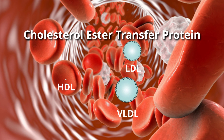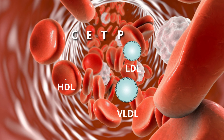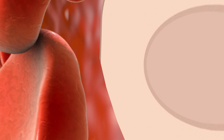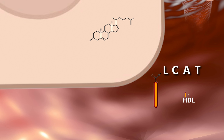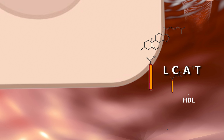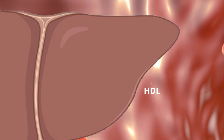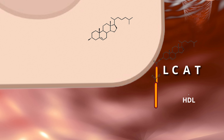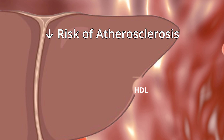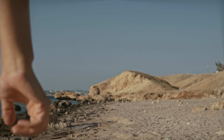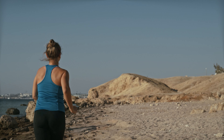Meanwhile, the enzyme cholesterol ester transfer protein (CETP) transfers cholesterol esters from HDL to VLDL and LDL. The plasma enzyme lecithin cholesterol acyltransferase (LCAT) catalyzes the esterification of free cholesterol present in extrahepatic tissues and transfers it to HDL, scavenging peripheral tissue cholesterol. Matured HDL rich in cholesterol is endocytosed by liver hepatocytes. This ability of HDL to promote reverse cholesterol transport is considered the basis for its role in reducing the risk of atherosclerosis.